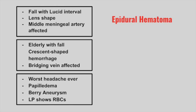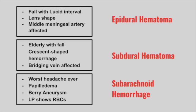Next is an elderly patient with a fall and crescent-shaped hemorrhages on imaging. The bridging veins are affected. This is a subdural hematoma. Next is a patient with the worst headache ever, papilledema, a berry aneurysm, and lumbar puncture showing red blood cells. This is a subarachnoid hemorrhage. Berry aneurysms form in patients with polycystic kidney disease, making this a common cause of death in that condition.